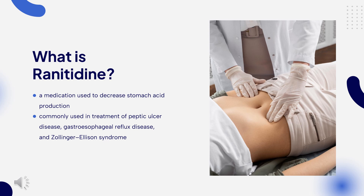Ranitidine was discovered in England in 1976 and came into commercial use in 1981. It is on the World Health Organization's list of essential medicines. By 2020, it was the 177th most commonly prescribed medication in the United States, with more than 3 million prescriptions, versus nearly 19 million two years earlier.